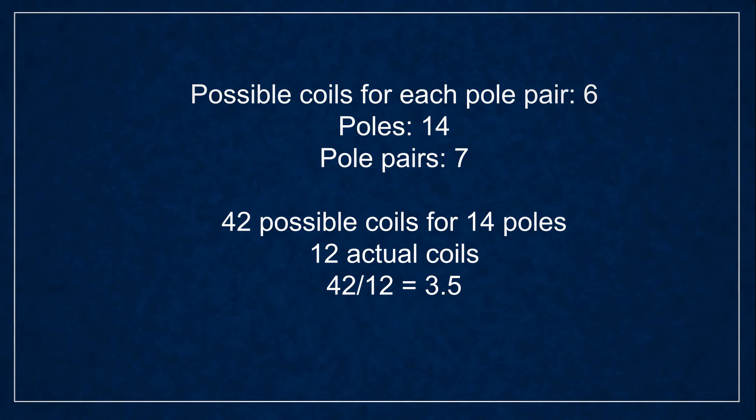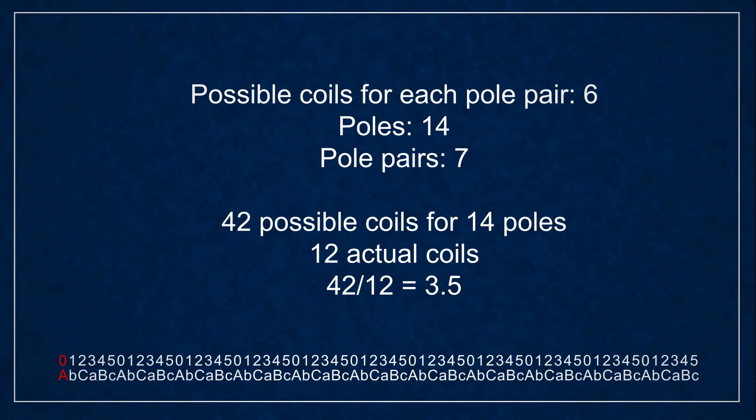If you have 12 coils, 42 divided by 12 is 3.5 so every 3 and a half position is used by your coils. This is where the closest match comes into play which you can do by rounding.